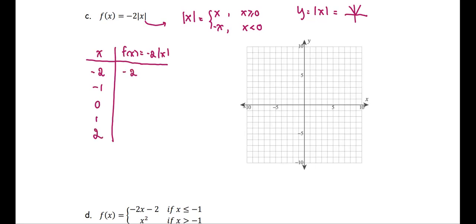-2|(-2)| by definition, |-2| returns positive 2, so -2 times 2 or -4. Next, -2|(-1)| or -2 times 1 returns -2. Next, -2|0| is going to be 0. -2|1| is -2. -2|2| is going to be -4.